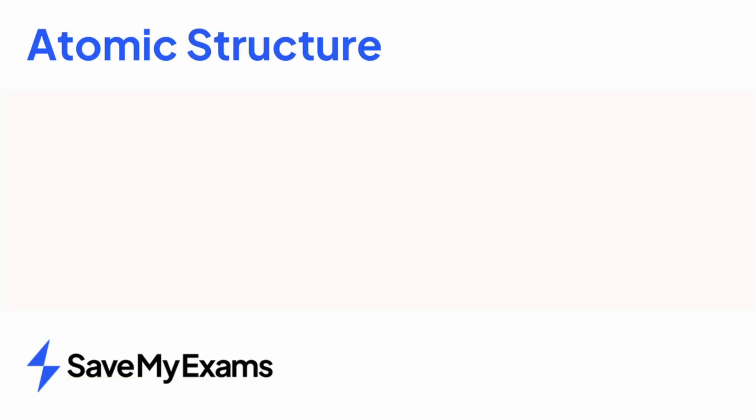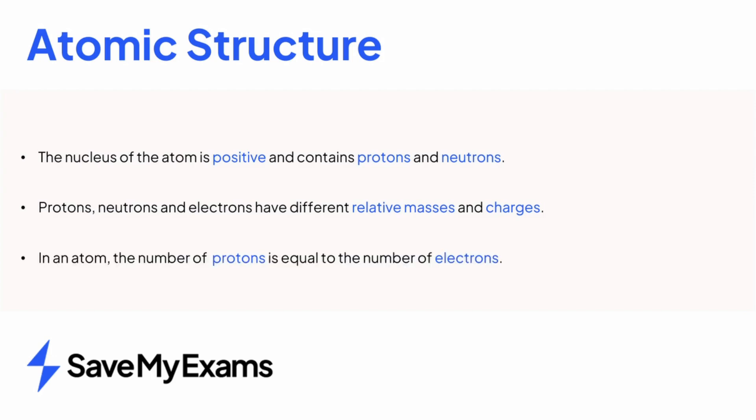In this video today we have covered that the nucleus is positive and contains protons and neutrons. Protons, neutrons and electrons all have different relative masses and charges. You need to be able to recall these in an exam apart from the relative mass of an electron which we can describe as negligible. And finally in a neutral atom the number of protons is equal to the number of electrons.